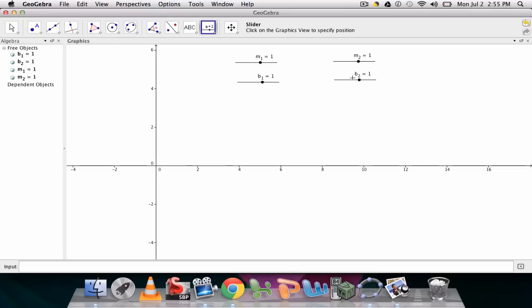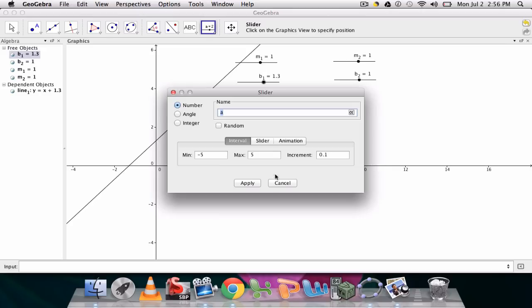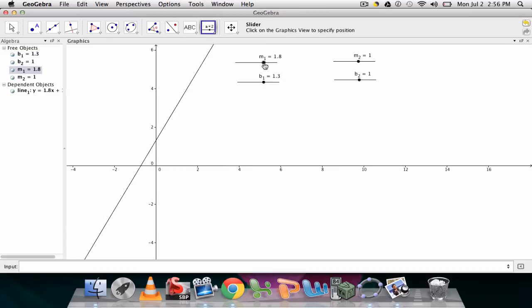Now I can manipulate the variables of each line. So now I want to enter in my lines. So first I have line underscore 1, colon, and then y equals m underscore 1. I do a space for multiplication, x plus b underscore 1. So that's just the equation for my first line. And once that's set up I can manipulate the y-intercept and the slope by changing the dot on the slider.